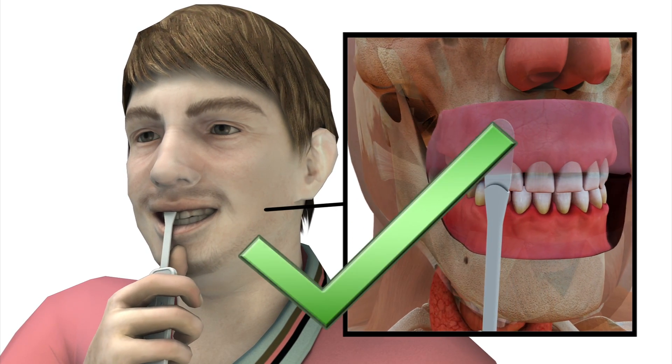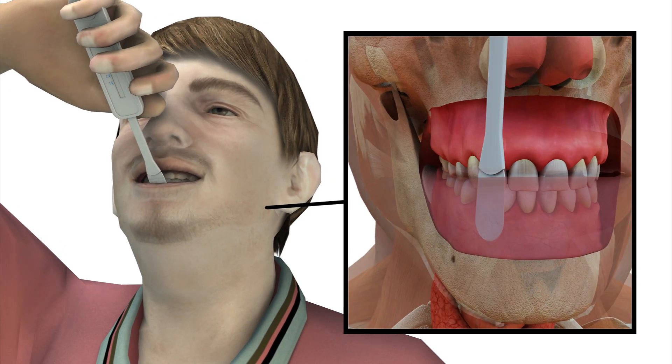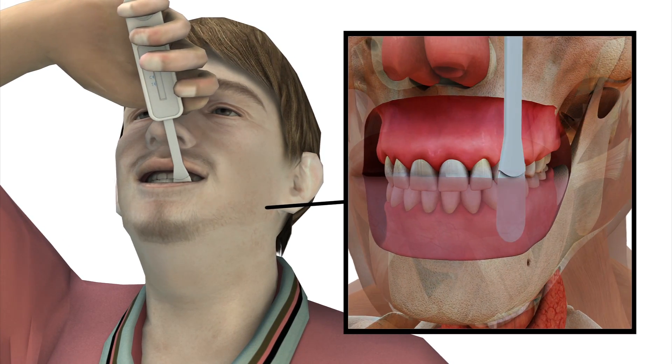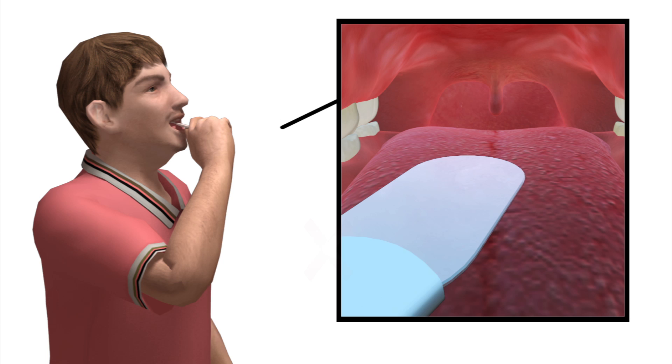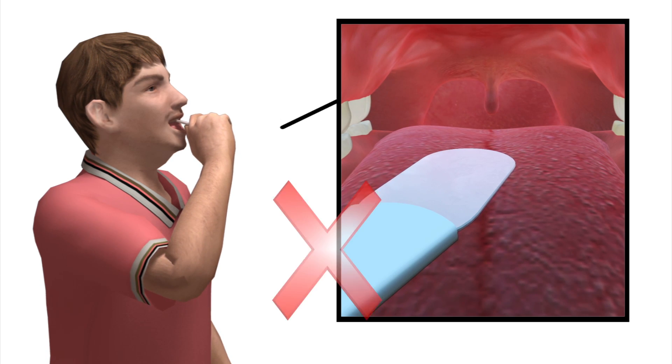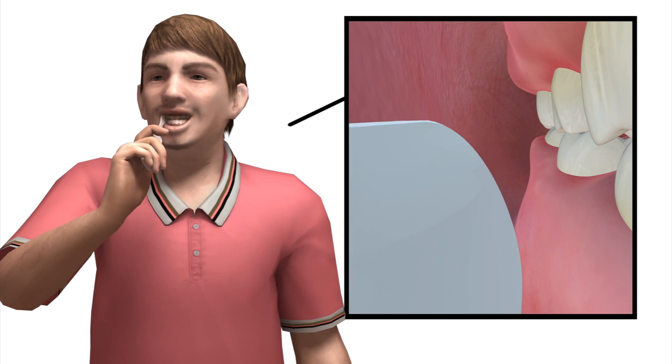To test, swab between the teeth and upper and lower gums for oral mucosal transudate. Do not allow the test kit to touch the tongue, inner cheek, or roof of the mouth to avoid collecting saliva.